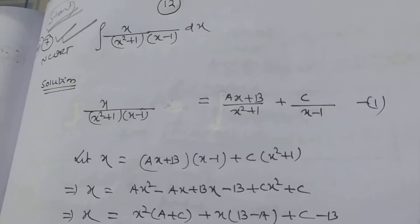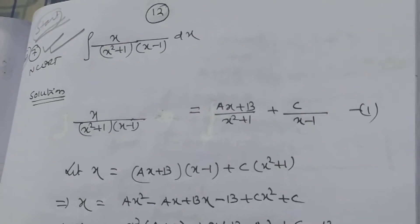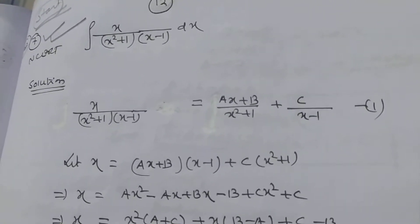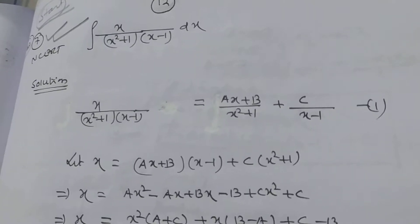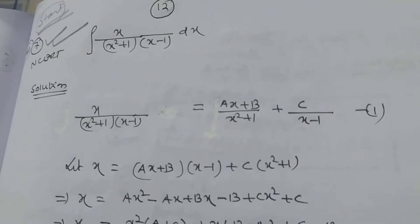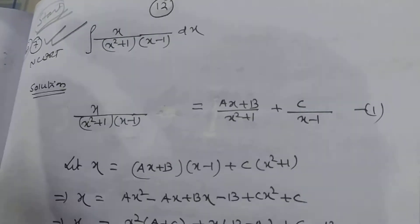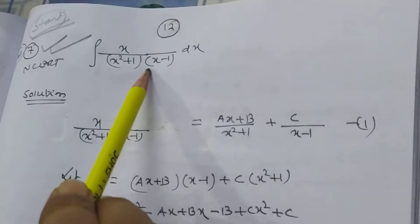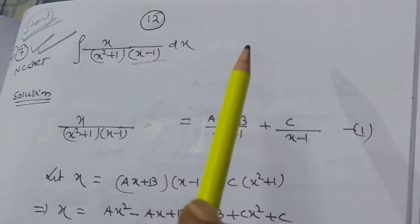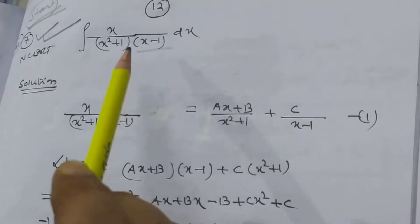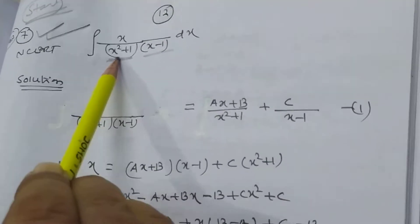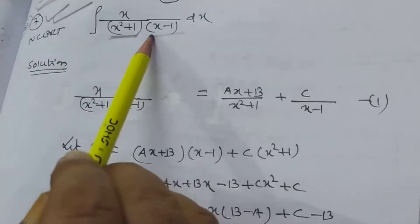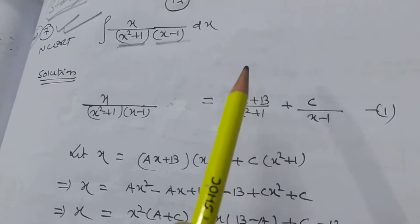My dear loving students, now I want to solve problem number 7 of the NCRT and problem number 7 of study material also. The problem is x divided by (x² + 1)(x - 1). We observe that in the denominator x² + 1 is a quadratic expression and x - 1 is a linear factor.